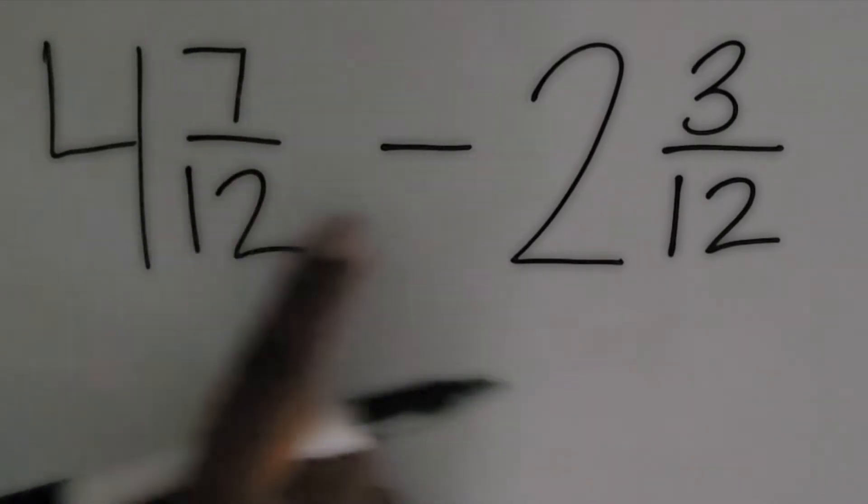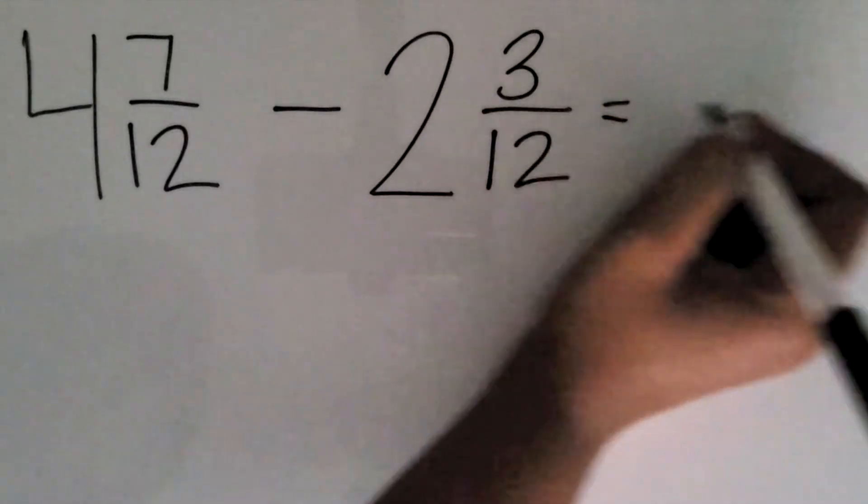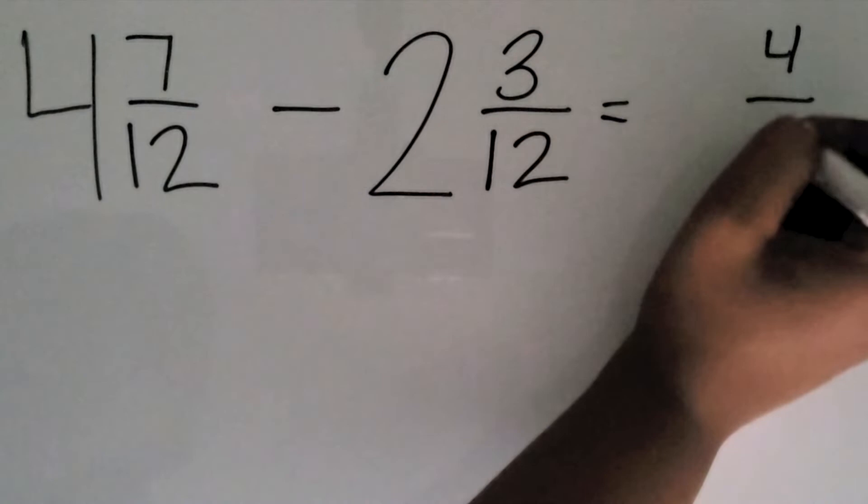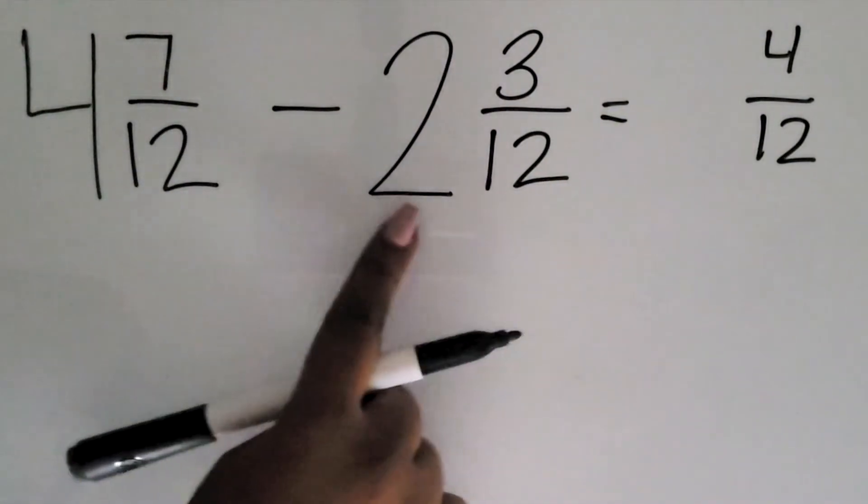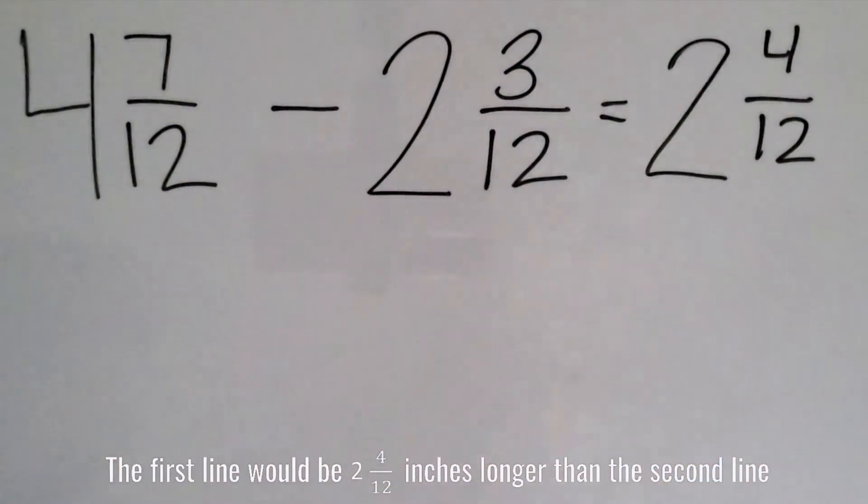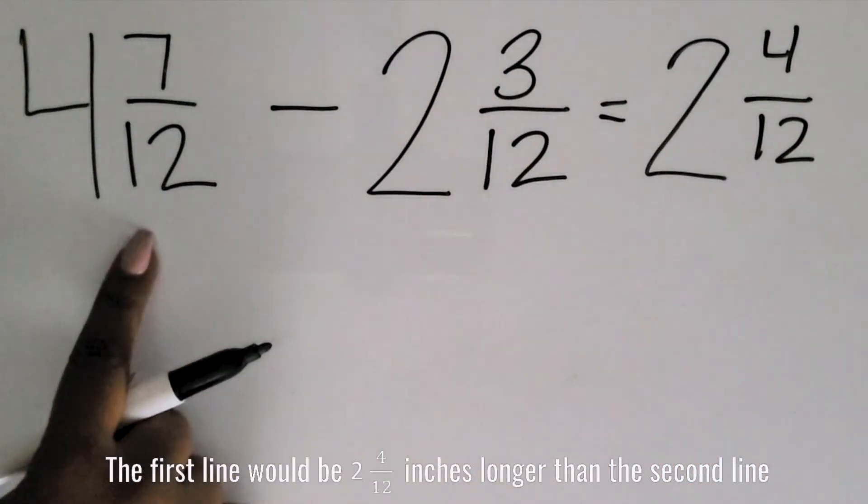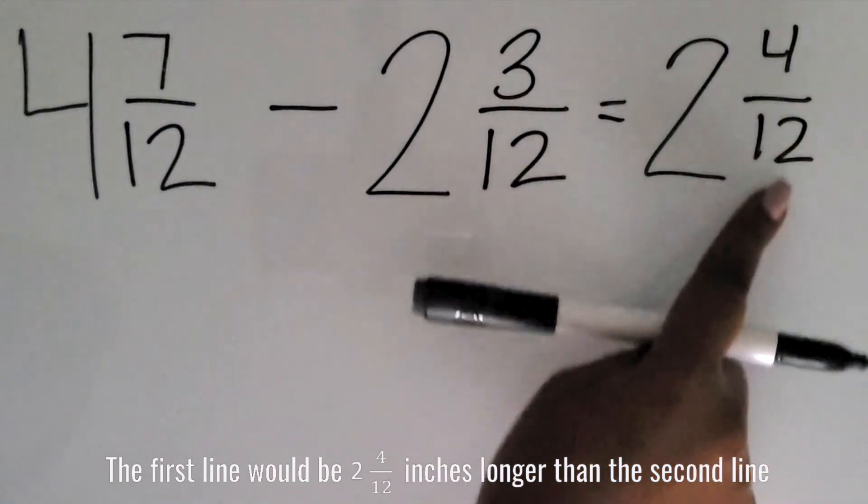So 7 twelfths minus 3 twelfths equals 4 twelfths. 4 wholes minus 2 wholes equals 2 wholes. So the difference of these two mixed numbers is 2 and 4 twelfths.